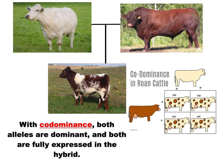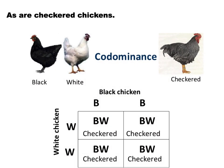Here's another co-dominance example: checkered chickens. You cross a white one and a black one, expecting white or black, but instead you get checkered. In some parts of the bird the white gene expresses, and in other parts the black gene expresses. Both genes get expressed — that's why we capitalize them to show they're both dominant. All the babies turned out checkered. If we cross two checkered babies, we get some white, some black, and some checkered offspring.